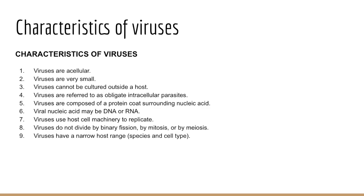Viruses are too small to be seen with a light microscope. Organisms smaller than bacteria have been known to exist since the late 19th century, but the first visualization of viruses came only after the electron microscope was developed. In 1931, German physicist Ernst Ruska built the first electron microscope for a PhD thesis, and eight years later he and colleagues were the first to visualize viruses — they saw the tobacco mosaic virus. From that point forward, the field of virology progressed quickly.